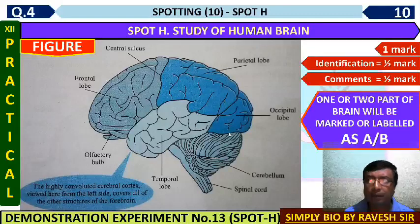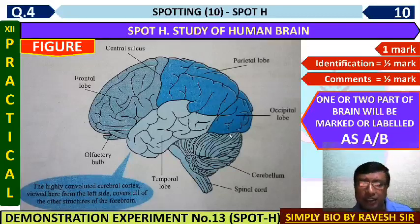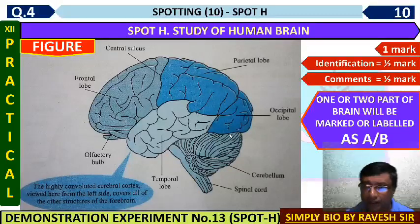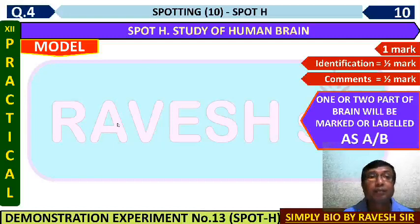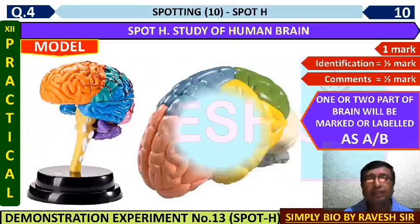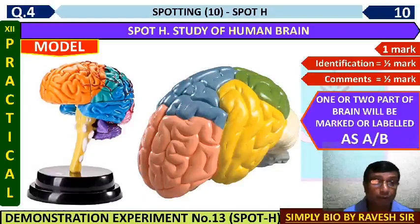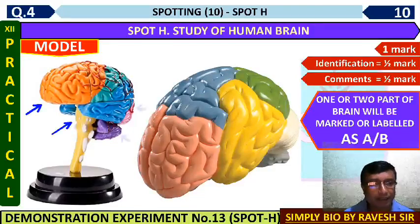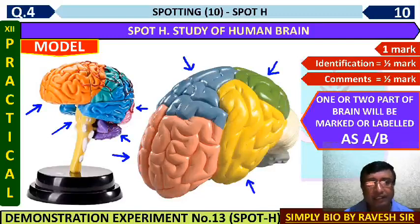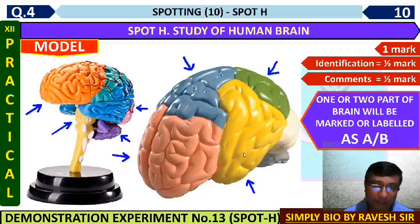One or two parts of the brain will be marked or labeled as A, B - one, two, or three depending upon your examiner. You identify them and then write the function. If available, the model of the human brain can be kept - there are various models available in the market or lab. A particular part of the brain will be marked or labeled, such as the frontal lobe, and you identify it.